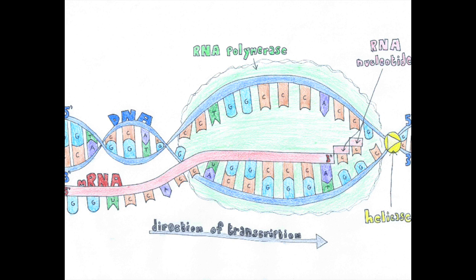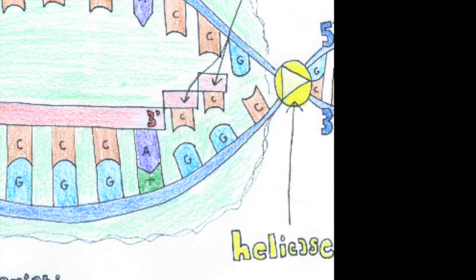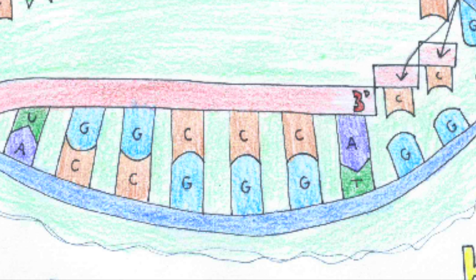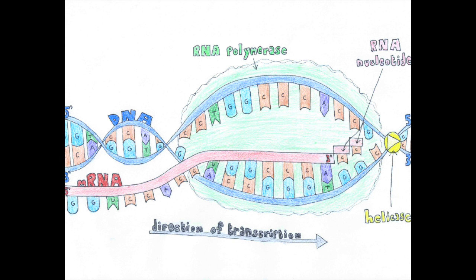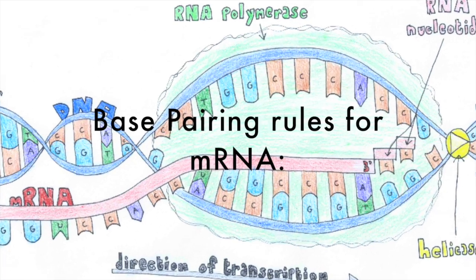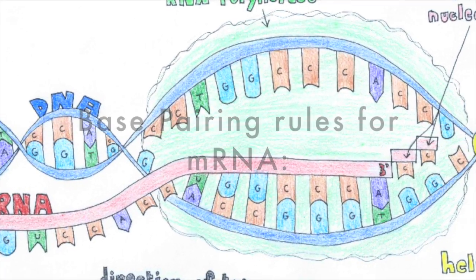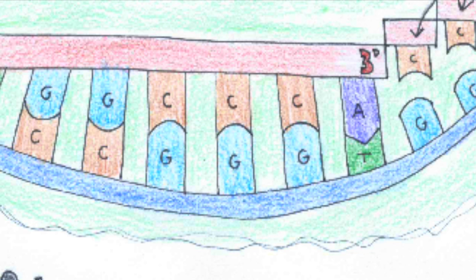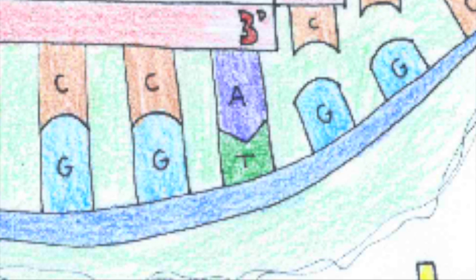First, an enzyme called helicase — a protein that helps to speed up this process — unzips the DNA. Then, another enzyme, RNA polymerase, helps RNA nucleotides line up along one strand of DNA, following the base pairing rules. The base pairing rules for mRNA state that U matches up with A, G matches up with C, C matches up with G, and A matches up with T.